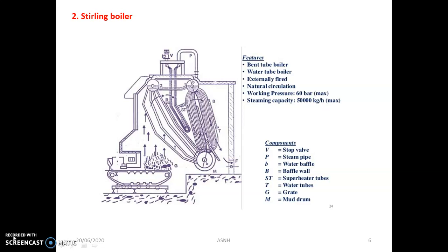The second important water tube boiler is the Sterling boiler. It consists of three drums: two upper drums and one drum located at the bottom. The bottom drum is the water or mud drum, while the upper two drums are the steam drums. The steam drums are connected to the mud drum by banks of bent tubes. The steam and water space of the steam drums are interconnected so that a balance of water and steam may be obtained.